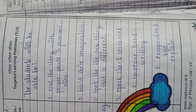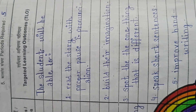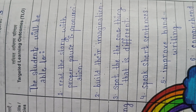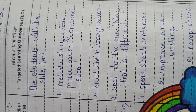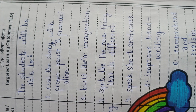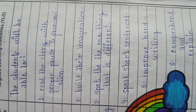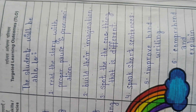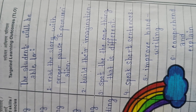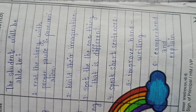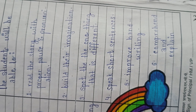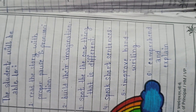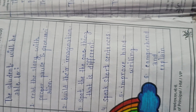Targeted learning outcomes: the students will be able to read the story with proper pause and pronunciation, build their imagination, spot the one thing that is different, speak short sentences, improve handwriting, and comprehend and explain.